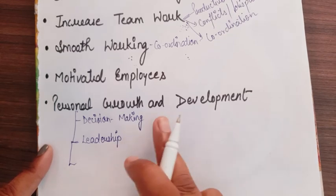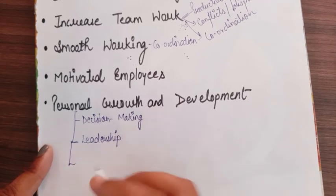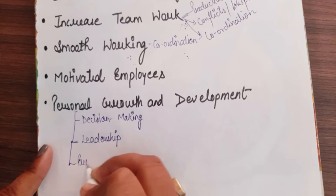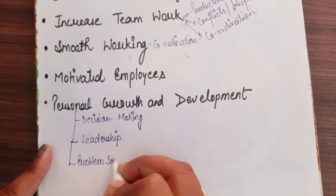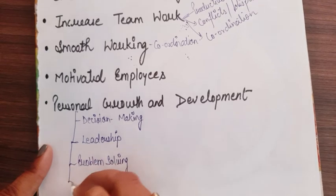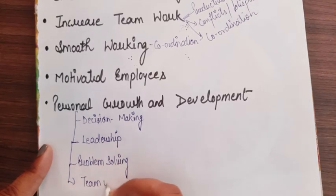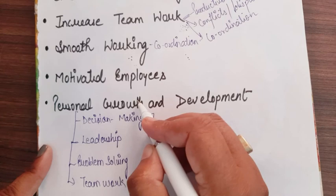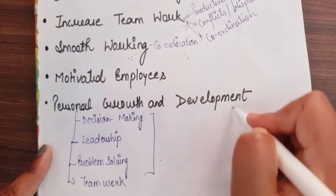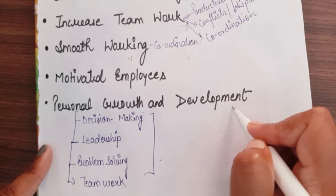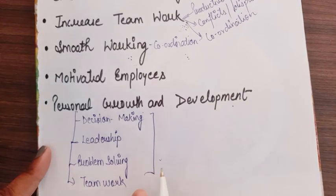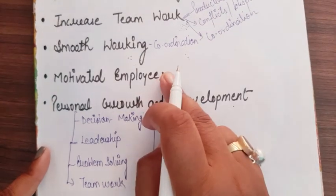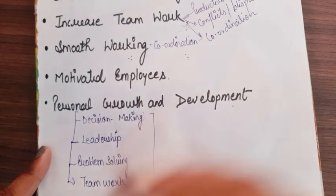Leadership quality development and decision-making development happen through quality circles. Problem-solving capacity is also developed, and team spirit is developed as you do teamwork. So personal growth also develops in the organization. When employees think that their personal growth and development is happening, their personal growth automatically motivates them, making this a very effective factor. These are the benefits of quality circles.